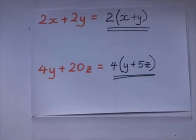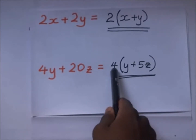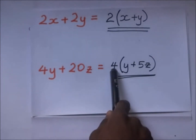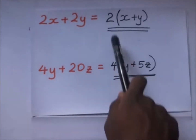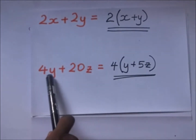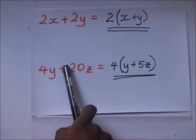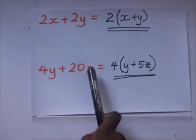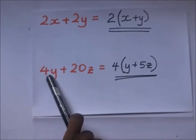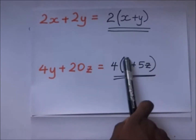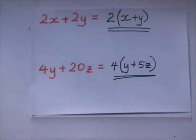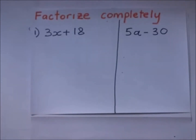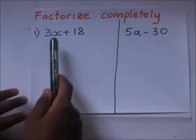In factorization, we identify the highest common factor, and then we divide the terms by it so that we are able to get the terms that go inside the brackets. We'll go ahead and start doing some worked examples.